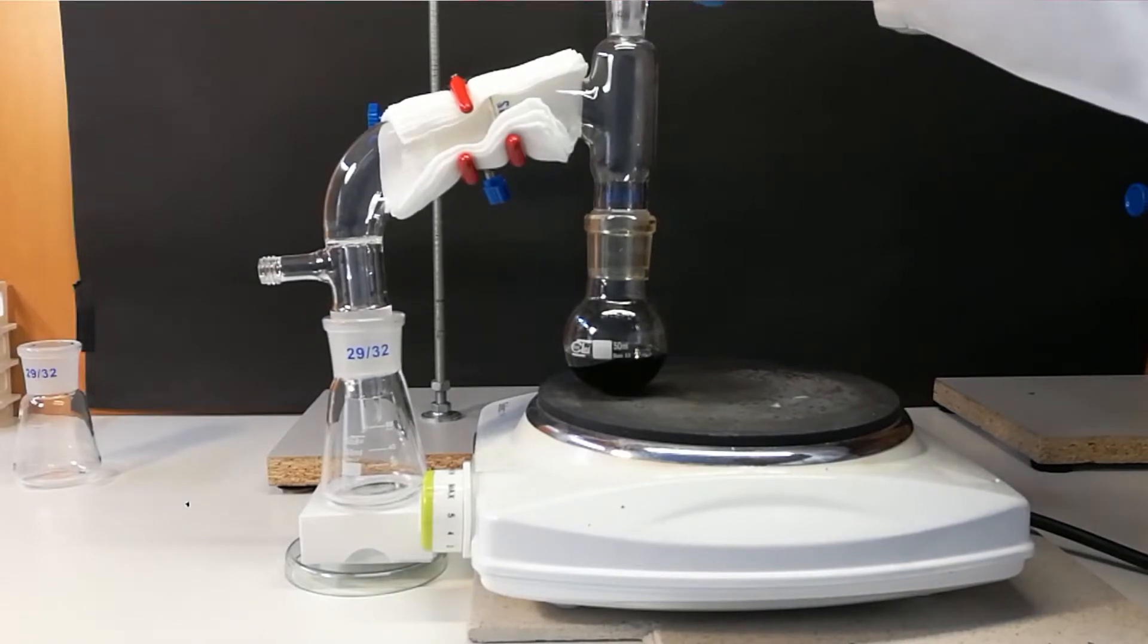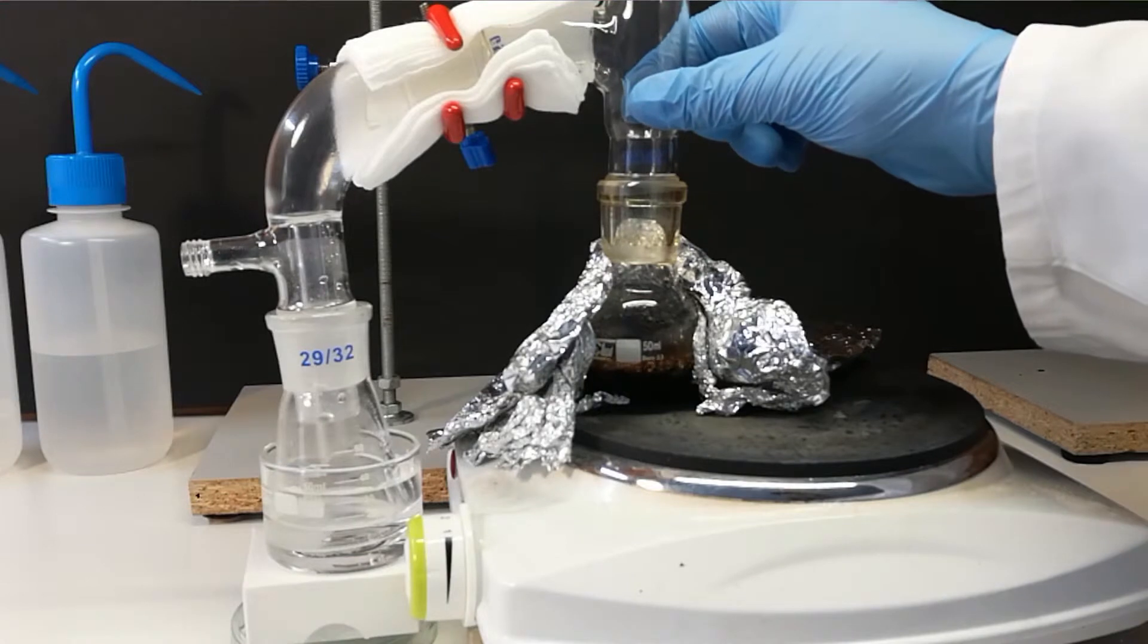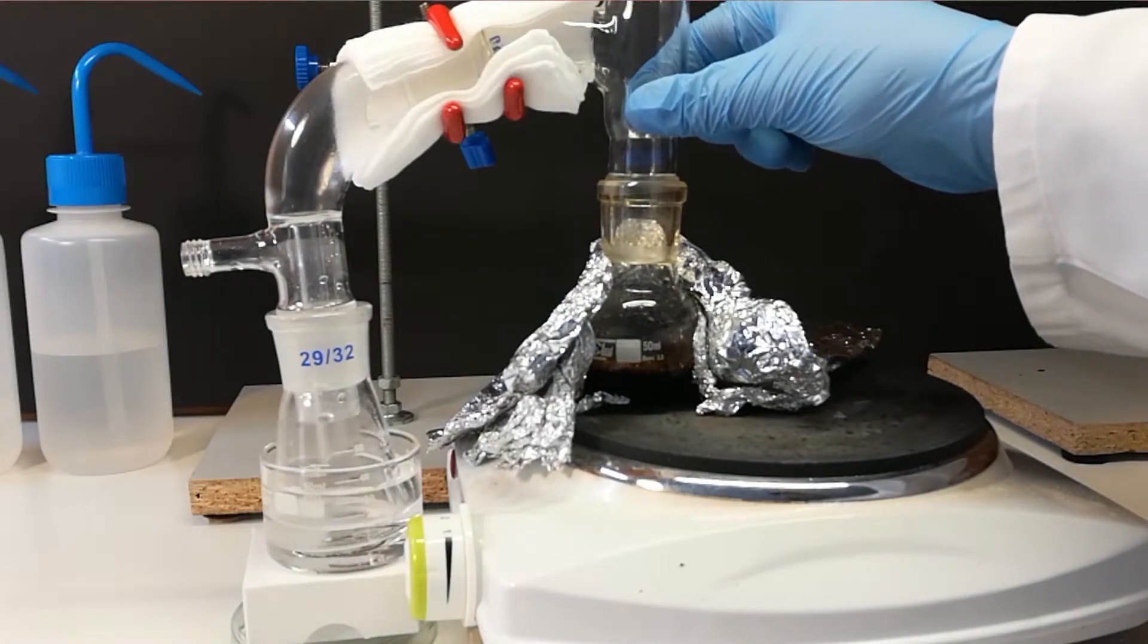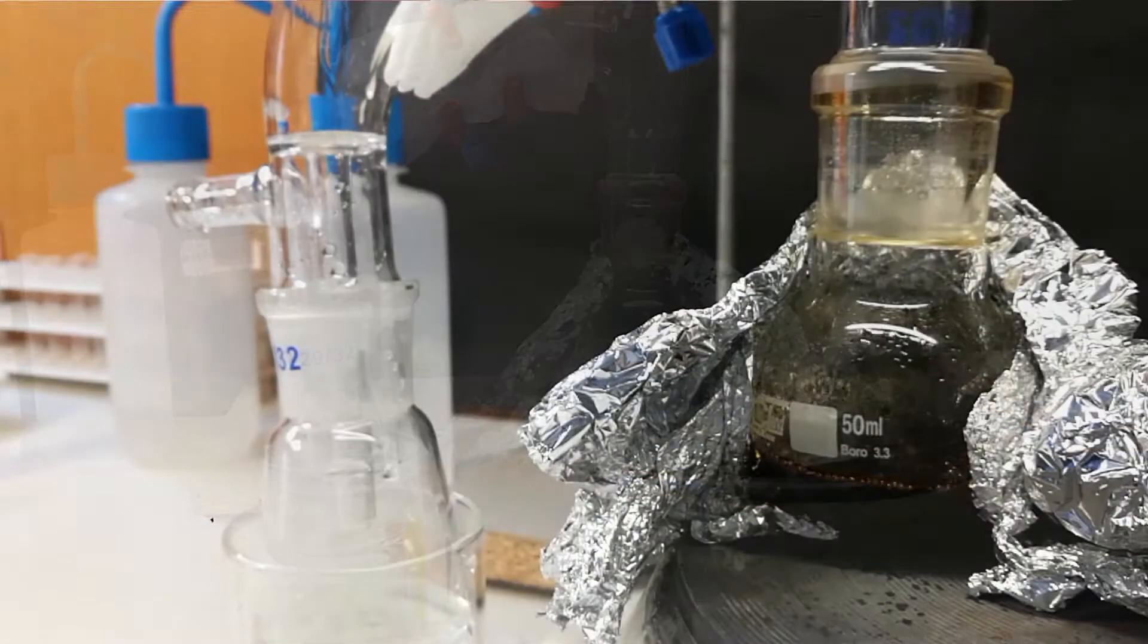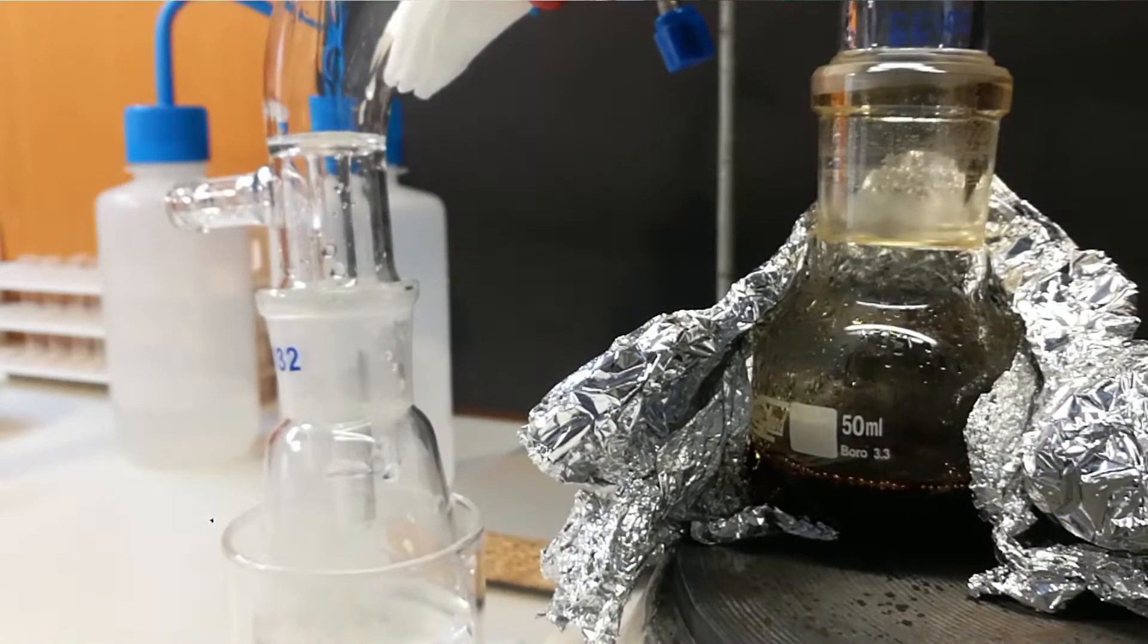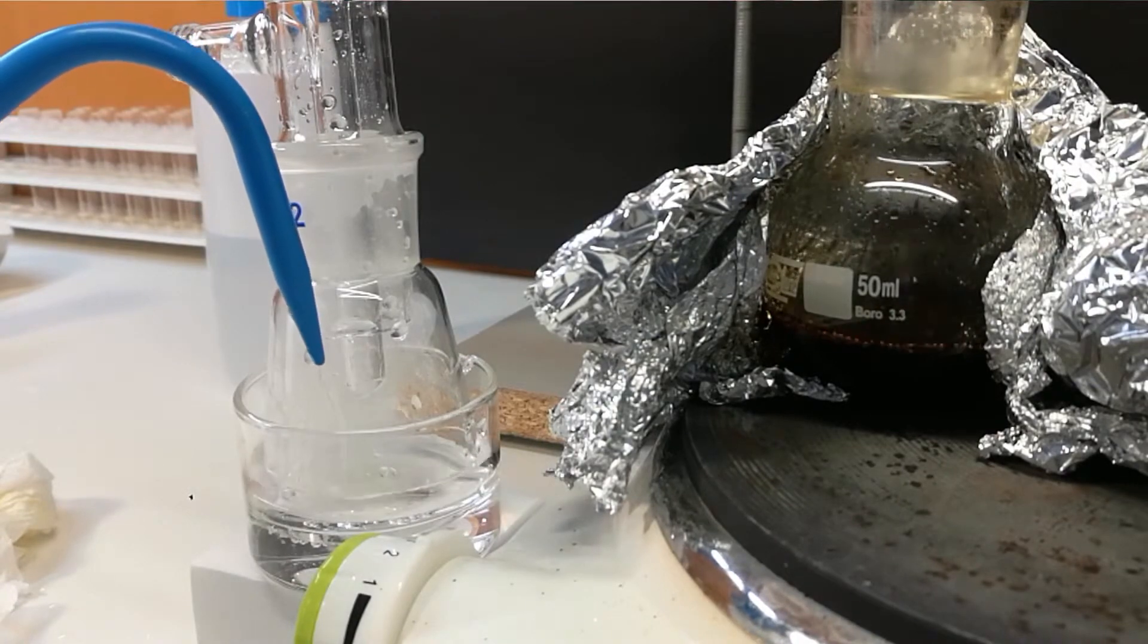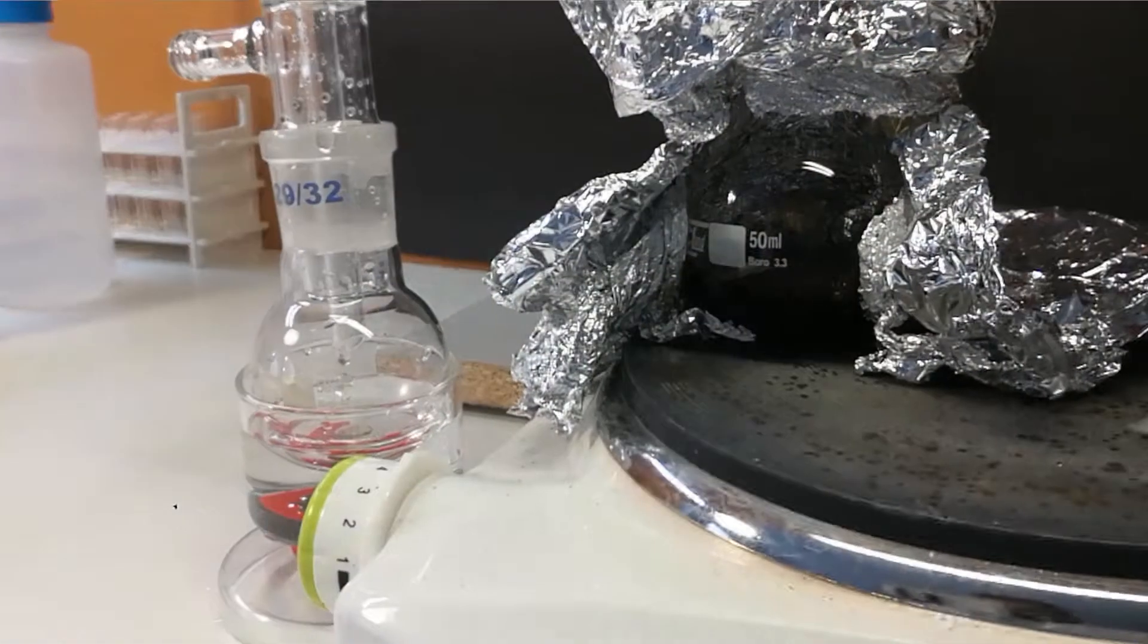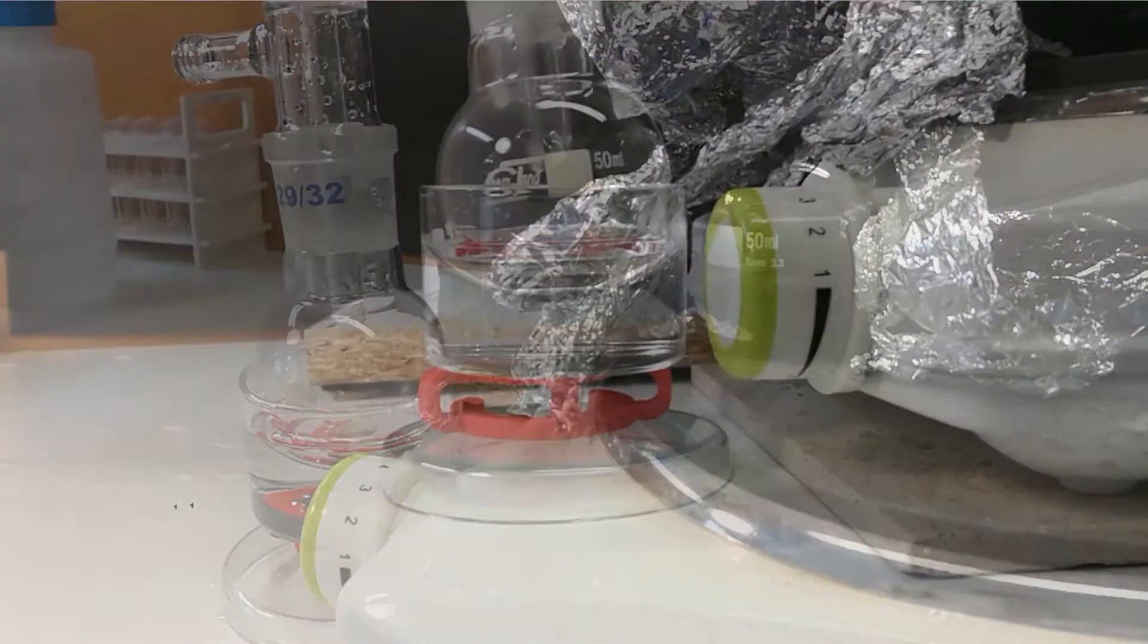Firstly, low boiling fractions are coming, like unreacted chloroform or ethanol and then water. Later at about 200 degrees our product distills over.